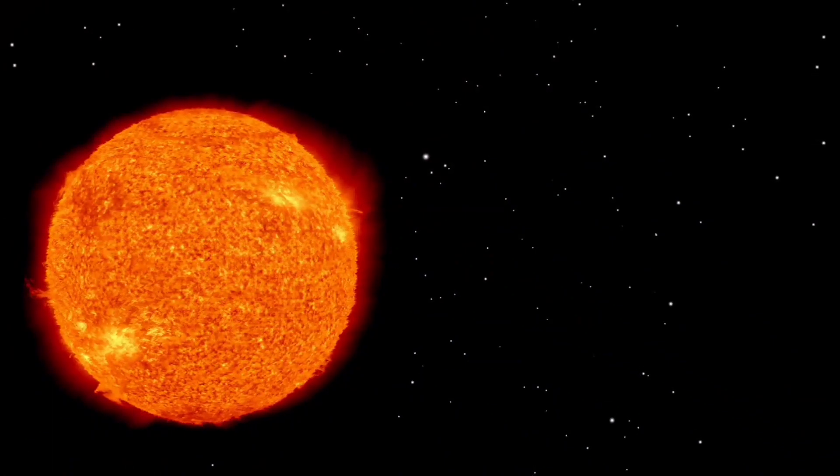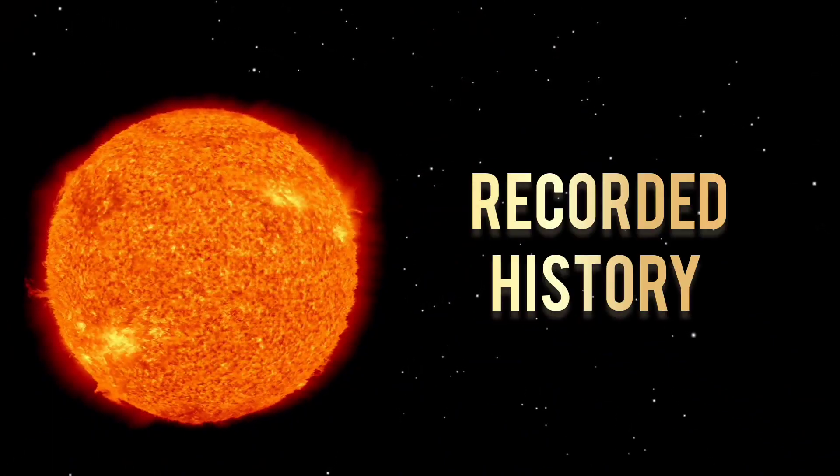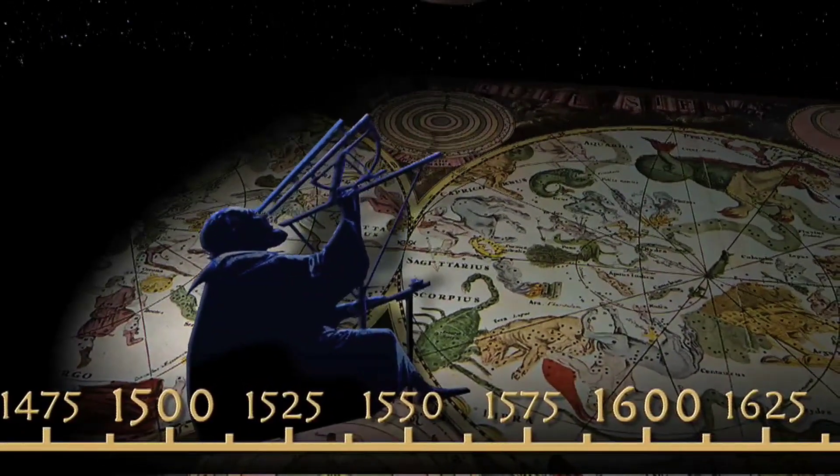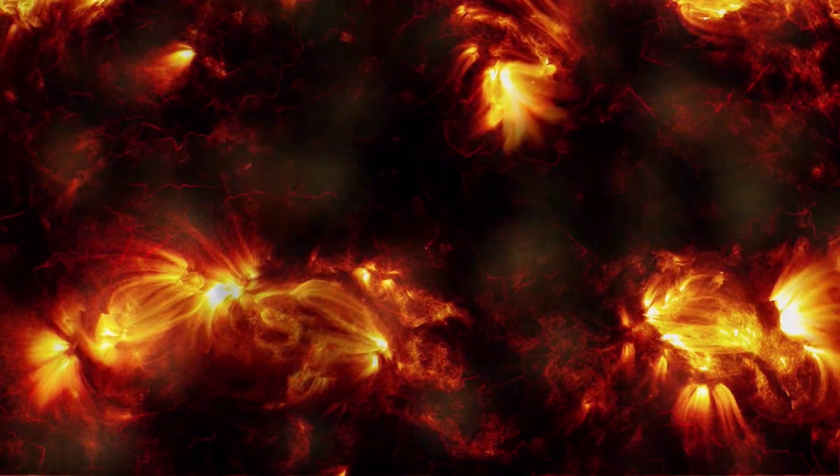Did you know that the most intense geomagnetic storm in recorded history was observed on September 1, 1859? The storm was named the Carrington Event.